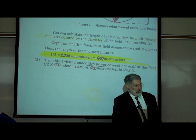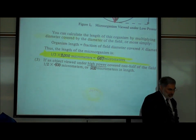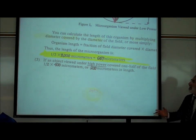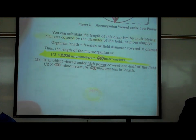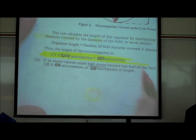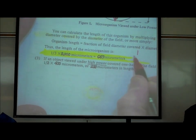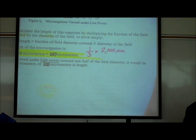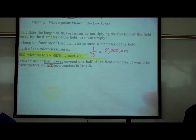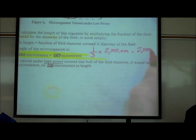One-third of 2,000 micrometers: you calculate one-third × 2,000 µm, which is 2,000 micrometers divided by 3.